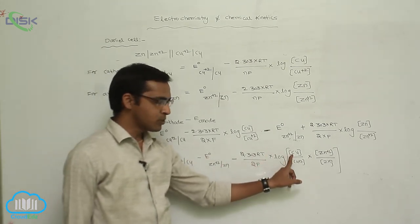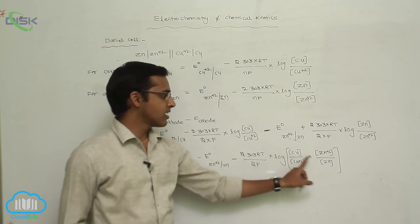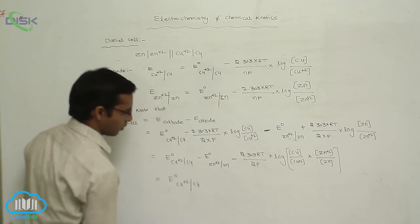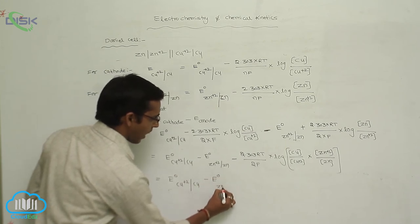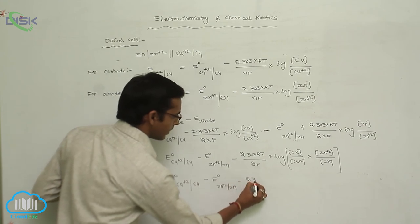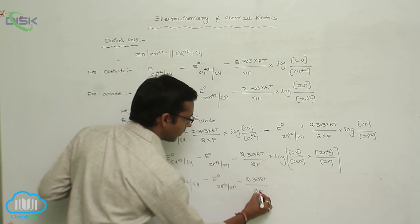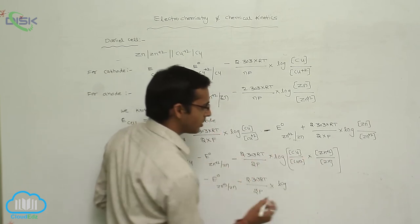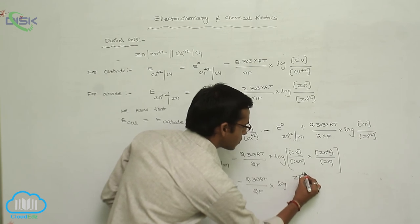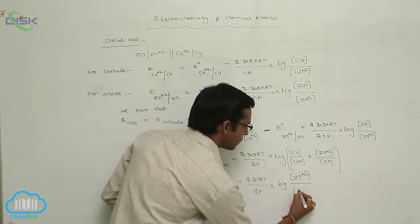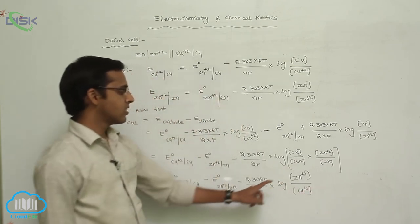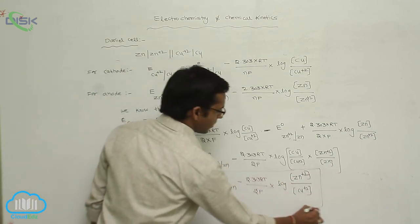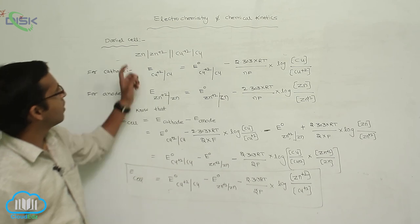The activity of a metal in pure solid, pure liquid, or pure gas is considered as unity. So E_cell equals E⁰_cathode minus E⁰_anode minus 2.303 RT by 2F into log — concentration of Zn²⁺ by concentration of Cu²⁺, that is concentration of product by concentration of reactant. This is how the EMF of the cell is calculated using the Nernst equation.